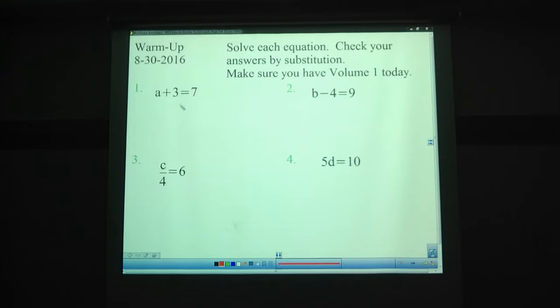Problem number one: a plus 3 equals 7. Solve these equations. Check your answers by substitution. Let's go over this. Pause the video and try these out. That's always what I'll tell you in every video repeatedly. Pause the video, try it out on your own, then press play. Okay, a plus 3 equals 7. So we'll subtract 3 from each side. A equals 4. Remember, you're always doing opposite operations. If you have a plus 3, you might have to do a minus 3 to get rid of that. So A equals 4.